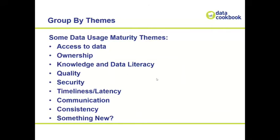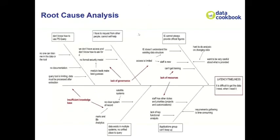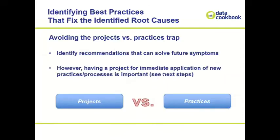Group the things people report into themes, then look for a root cause. You don't have to do a fishbone analysis, but it helps to ask: what is causing people to not have this done in time? That identifies where there's a real opportunity for change. Once you have those root causes, look at how you can solve them — what best practices can fix that? A lot of data governance best practices are designed to help solve many of these root causes.